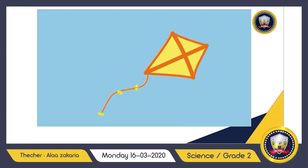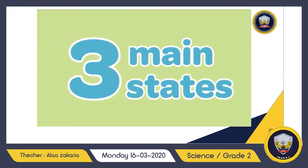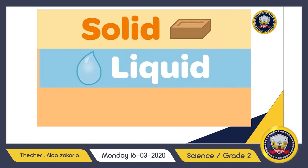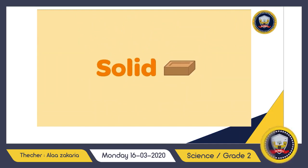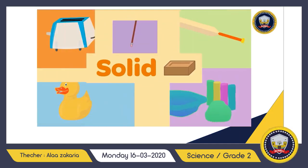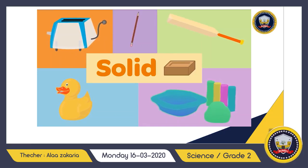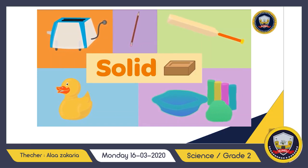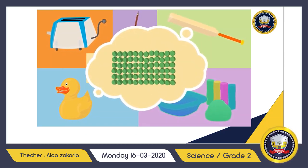There are three main states, or kinds, of matter: solid, liquid, or gas. A solid is something that holds its shape. Solids can be hard, like a toaster, a pencil, or a cricket bat, or they can be soft, like a rubber toy or a piece of clay.